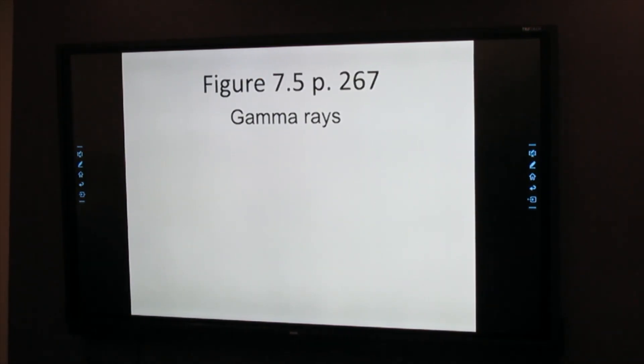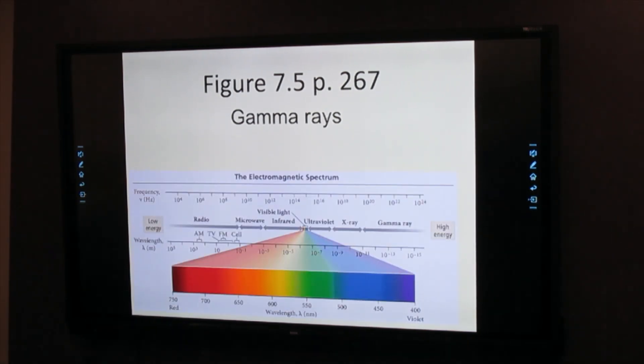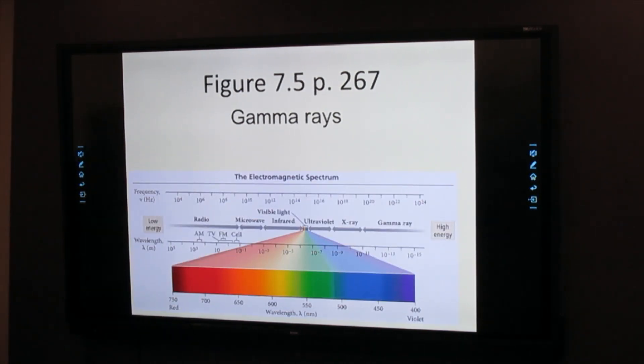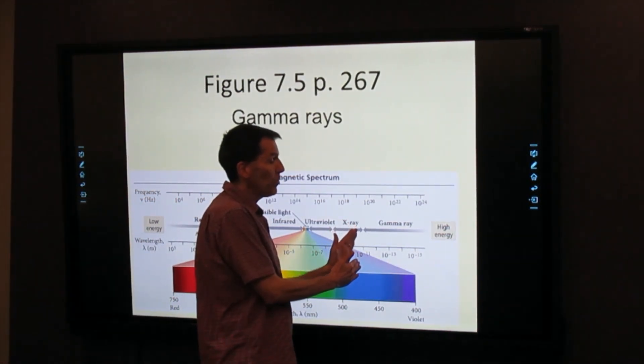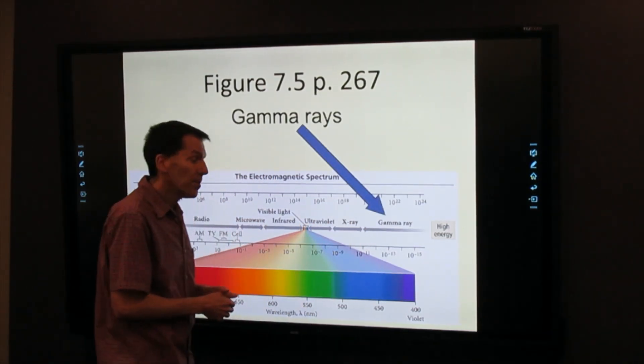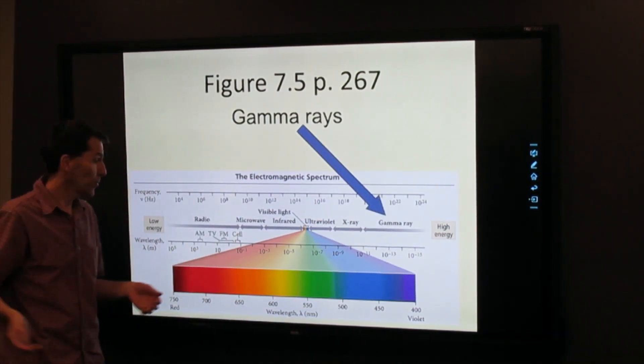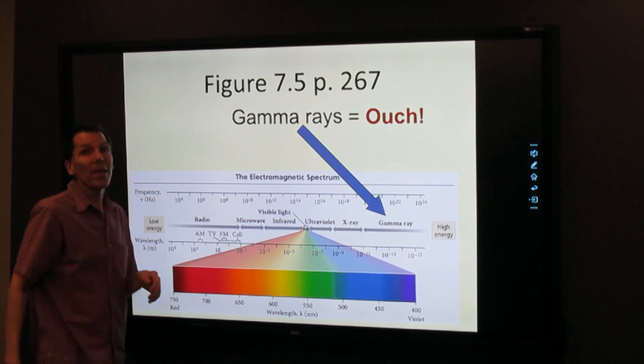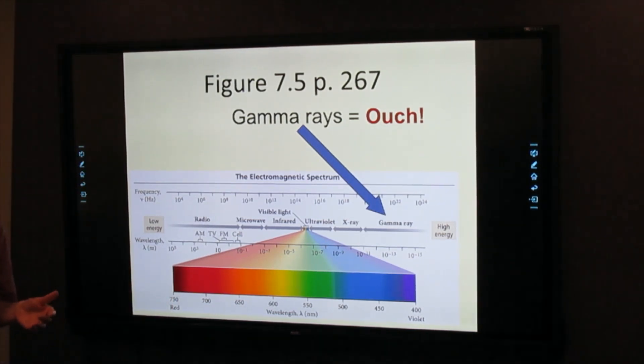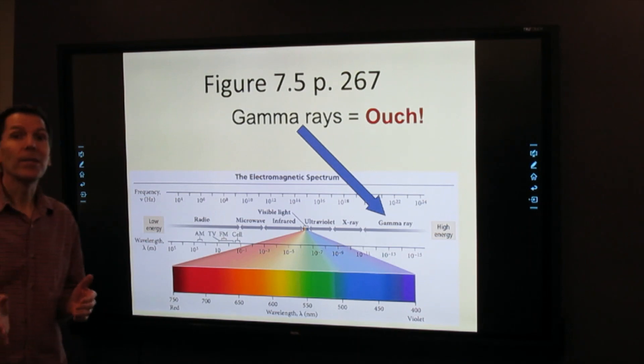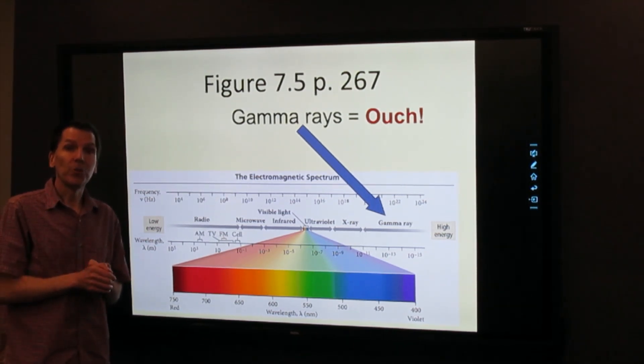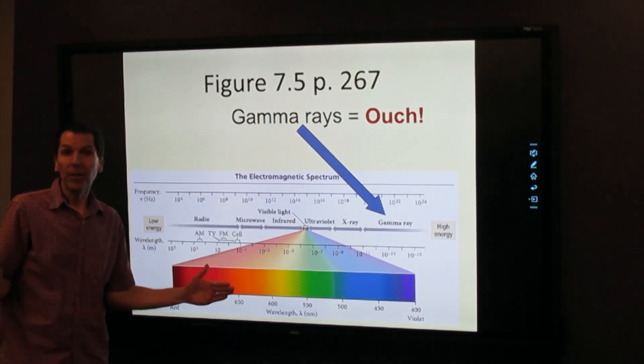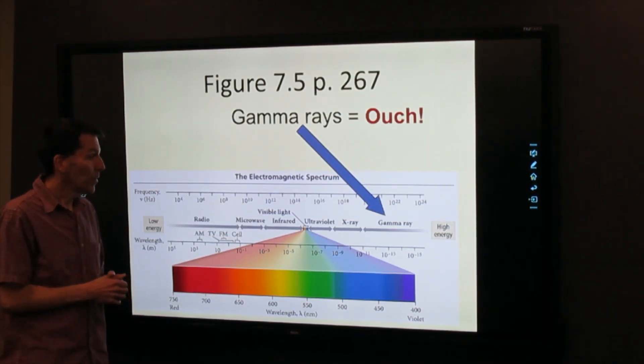If you think back to Chapter 7, gamma rays were on that electromagnetic spectrum. You can see them all the way over on the right. It's the very high energy, high frequency photons, gamma radiation. It's the same gamma rays from Chapter 7. Depending on the quantity involved, this could do serious damage to a person. Blocking gamma rays takes approximately 24 inches of concrete to block a gamma ray, so they're very difficult to deal with.